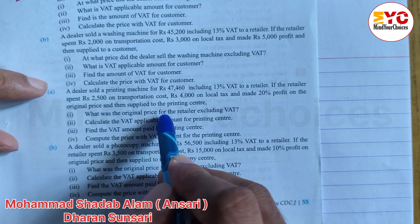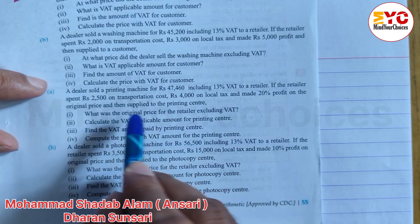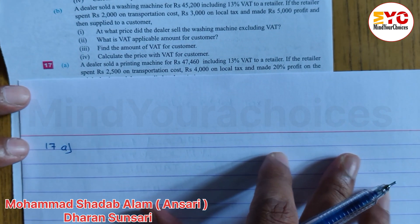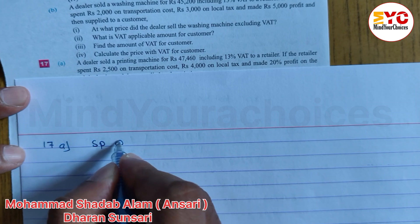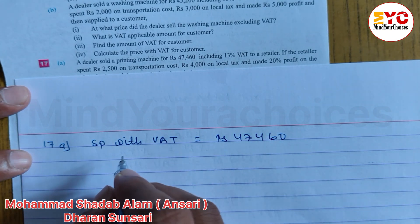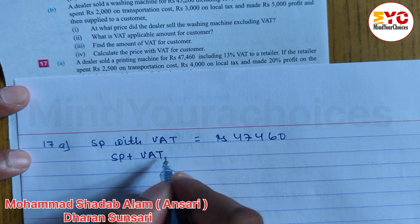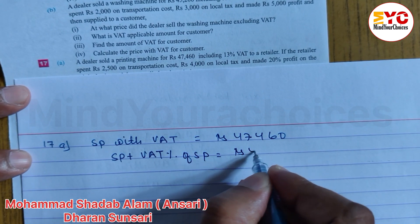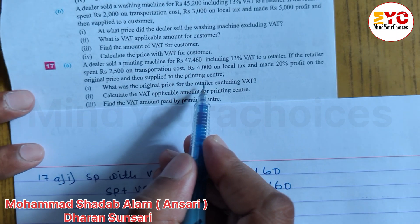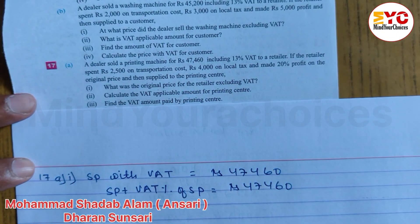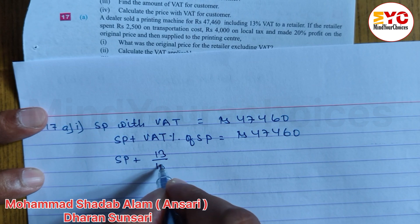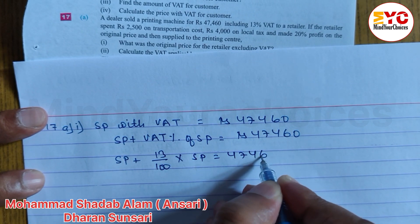The original price is Rs. 47,460. So we can write here: SP with VAT is equal to Rs. 47,460. SP plus VAT percent of SP — that is SP plus 13% of SP — is equal to Rs. 47,460. Because VAT is paid by the customer.